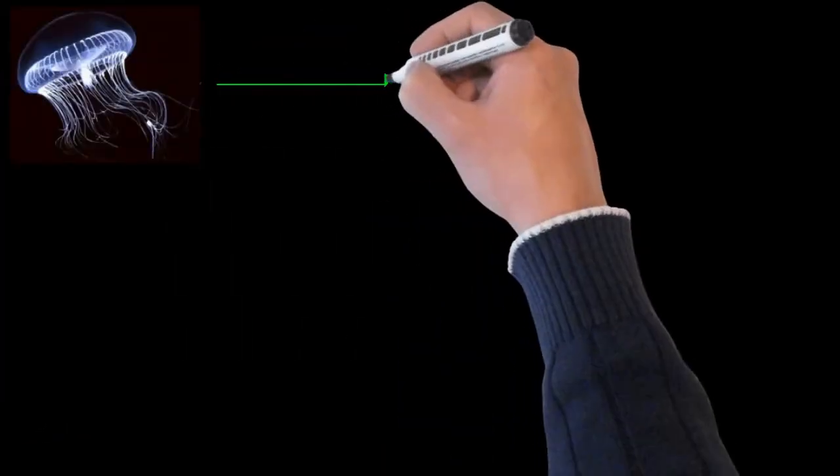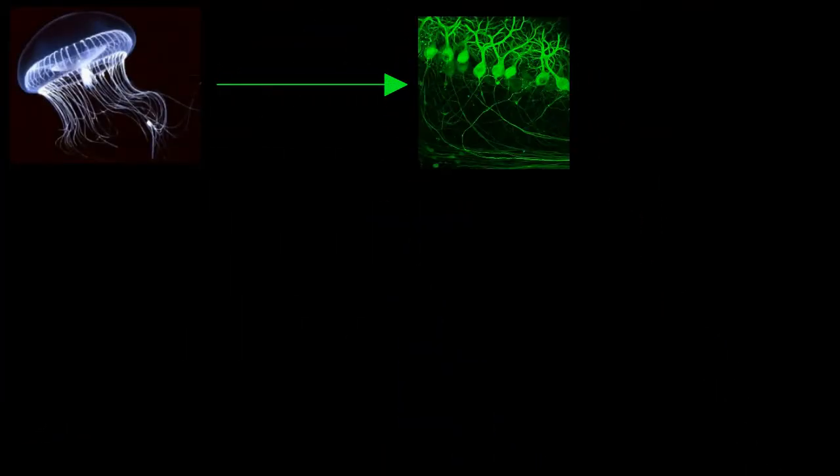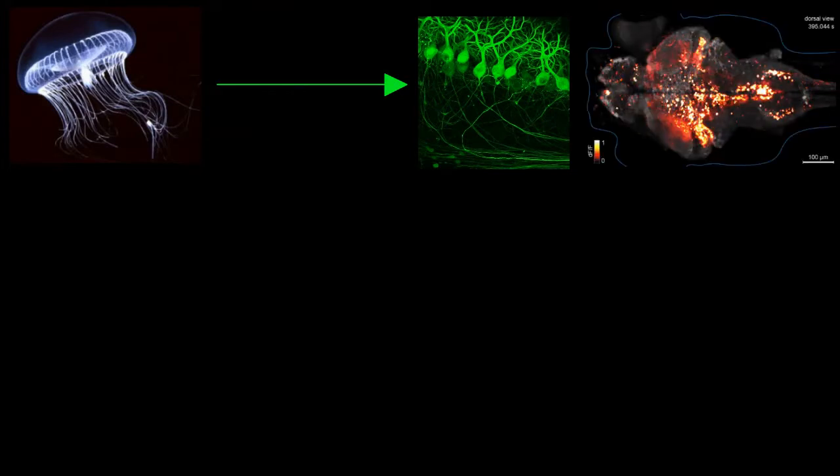A glowing protein from jellyfish can be used to visualize cells. By recombining it with two other proteins, it becomes a sensor that gives a visual readout of neuronal activity.